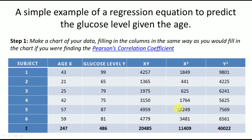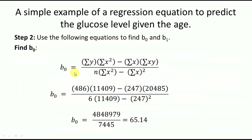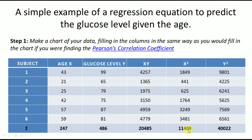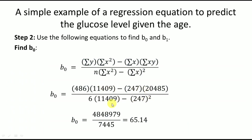Once we have this table, the remaining work is straightforward. We have all the summation terms and n equals 6. Plugging the values into the b0 equation — summation of y is 486, summation of x² is 11409 — and solving, we get the value of b0 equal to 65.14.